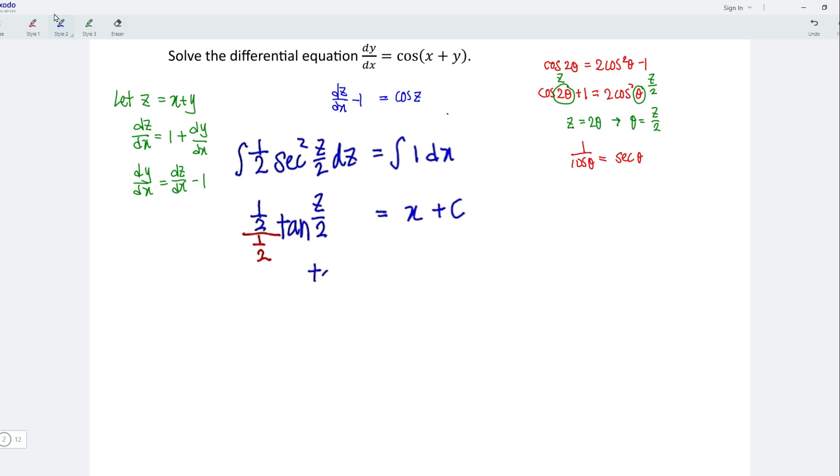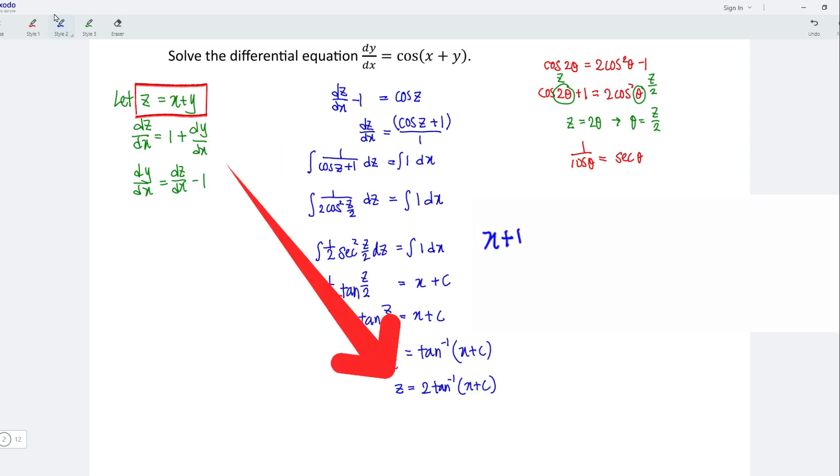Let's simplify. We should obtain tangent z over 2 equals x plus c. Let's take the inverse of the trigonometric function. And we have z over 2 equals arctan x plus c. And z equals 2 arctan x plus c. And we can now replace z with x plus y.